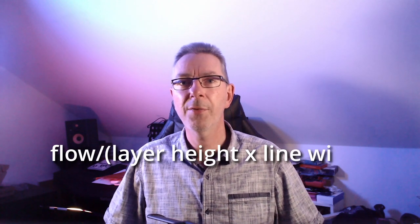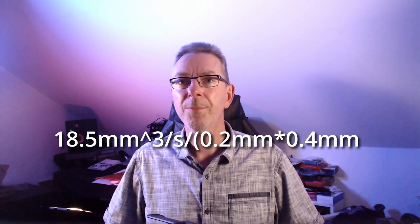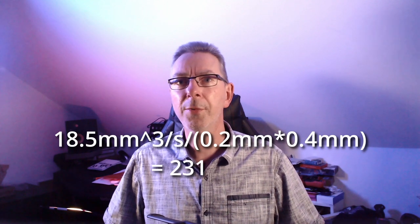Before doing some test prints, I calculated the maximum possible print speed from the flow values I found. This is done very easily by dividing the maximum flow by the product of the layer height and the line width. In my case, 18.5 cubic millimeters per second divided by 0.2mm times 0.4mm, and I get a maximum speed of 231mm per second, or about 4.5 times faster than my usual speed of 50mm per second.